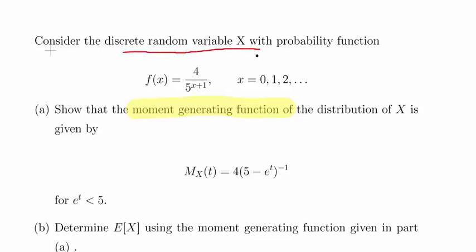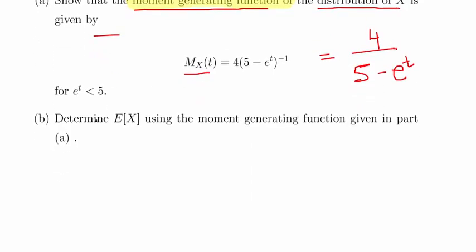Consider the discrete random variable X with the probability function f(x) equals 4 over 5 to the x plus 1, for x equal to 0, 1, 2, all the way up to infinity. Show that the moment generating function of the distribution of X is given by this expression here: M_X(t) equals 4 times (5 minus e to the t)^(-1). Actually, you might also write that as 4 over (5 minus e to the t). For e to the t less than 5.